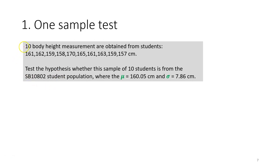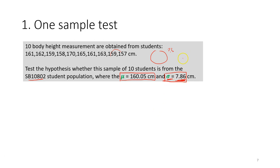Here is a worked example. Even though we have only 10 observations, we will use the z-test to save calculation time. The question is to test whether a sample of 10 students comes from the student population of this course, where the population mean is 160.5 cm and the standard deviation is 7.86 cm. Since the population parameter is given, we use the z-test.